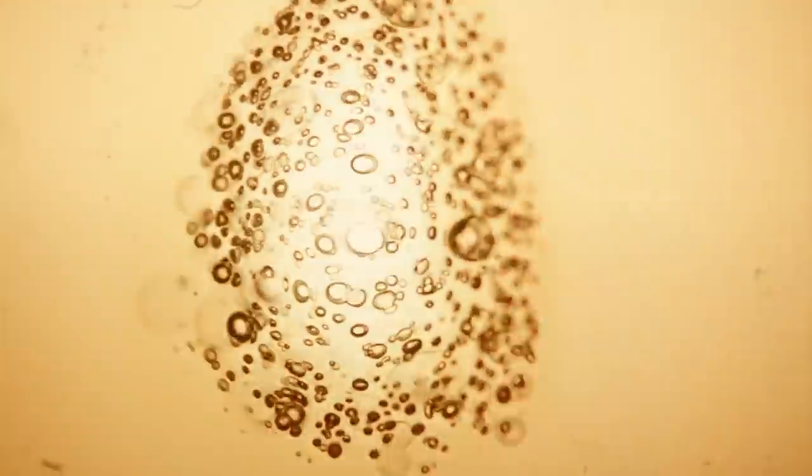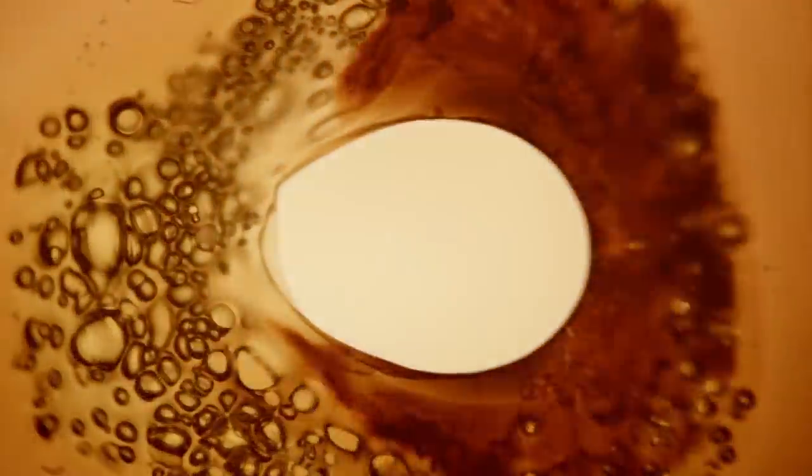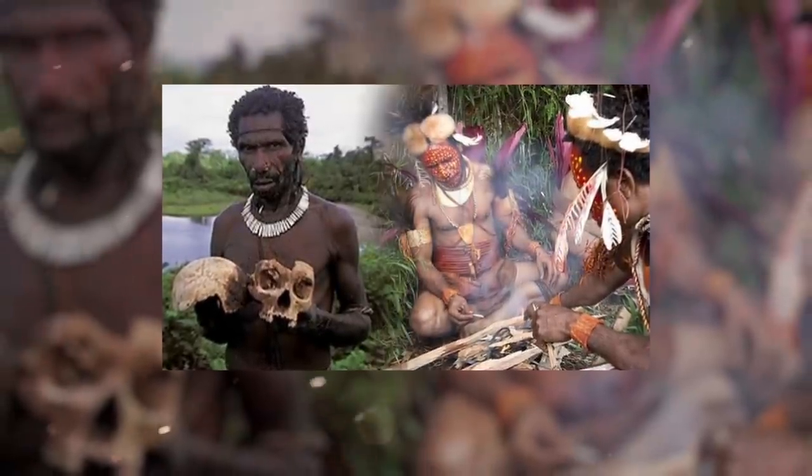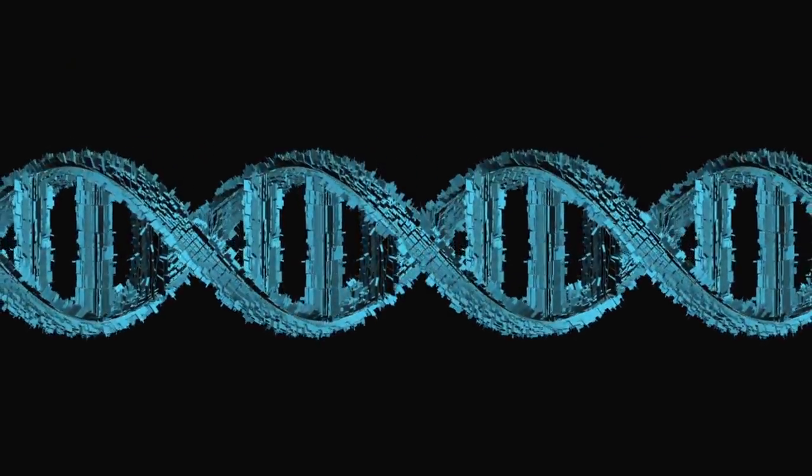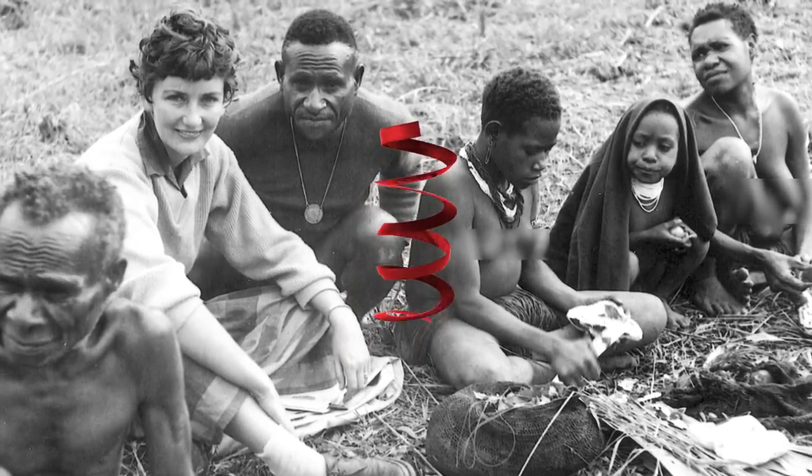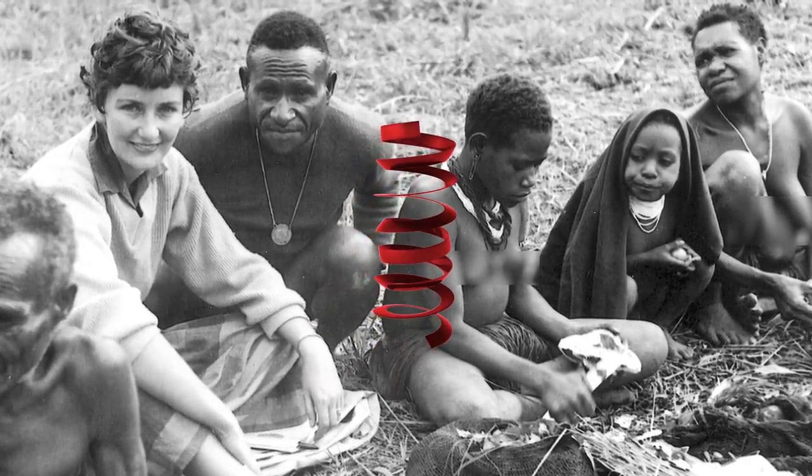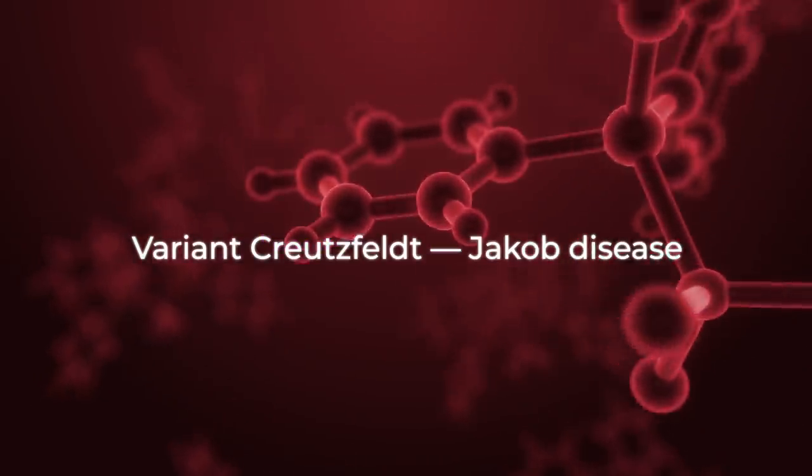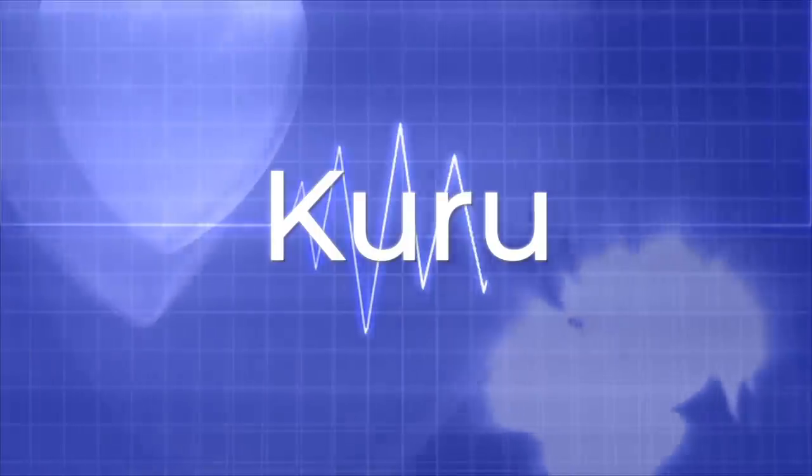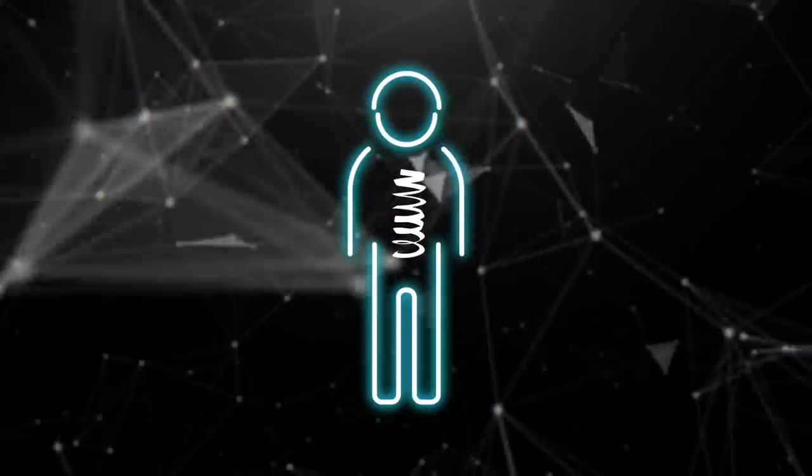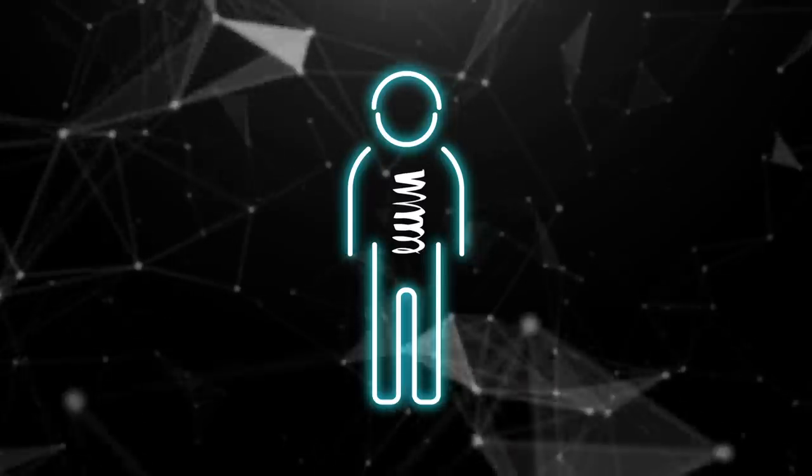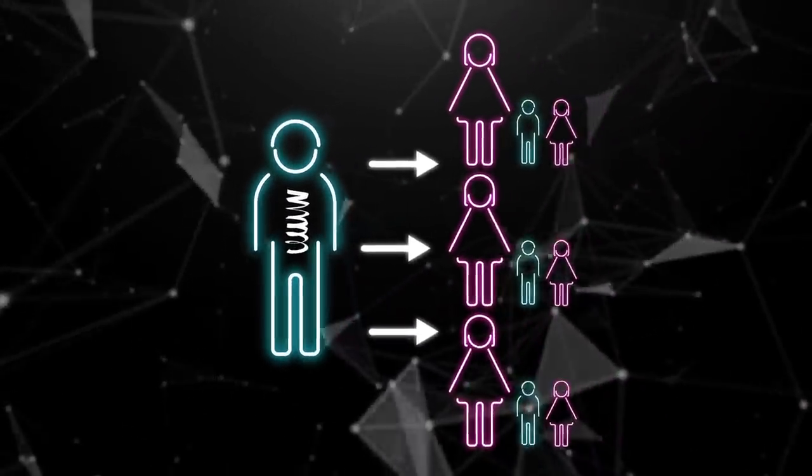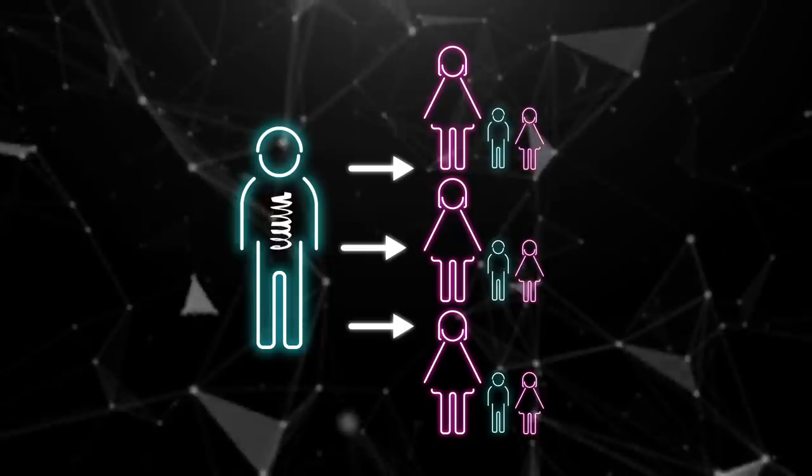The Fore tribe was a fairly isolated population. Therefore, due to genetic degeneration, the mechanisms for the self-cleaning of cells from prions were disrupted in one of the local residents, which led to the emergence of another prion disease, variant Creutzfeldt-Jakob disease, similar in symptoms to Kuru. An infected person developed pathological prions, and after death, passed them on to all the women and children who ate the brain of their dead relative.